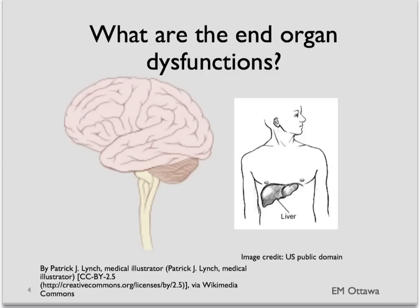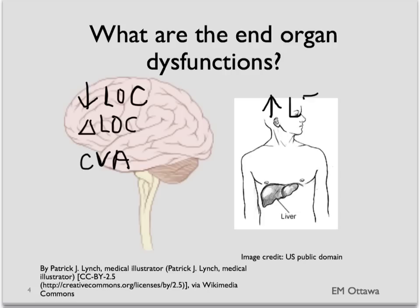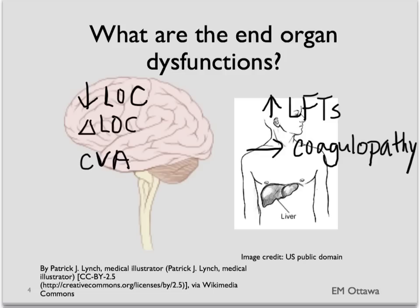In the central nervous system, shock can cause a decreased level of consciousness, leading to confusion or agitation. It can also cause strokes. In the liver, shock can cause liver enzymes and liver function tests to go up, leading to coagulopathy. Shock can also cause the kidneys to fail, leading to acute renal failure.